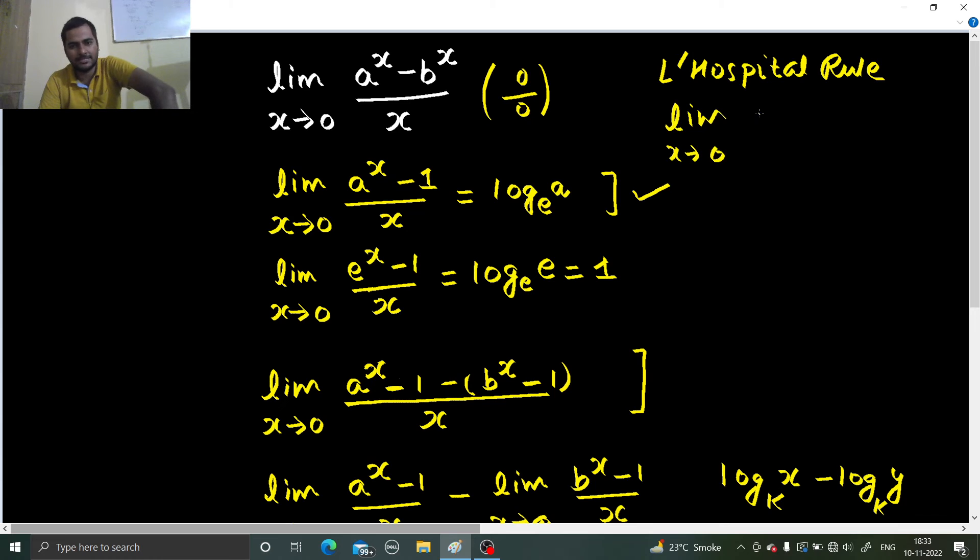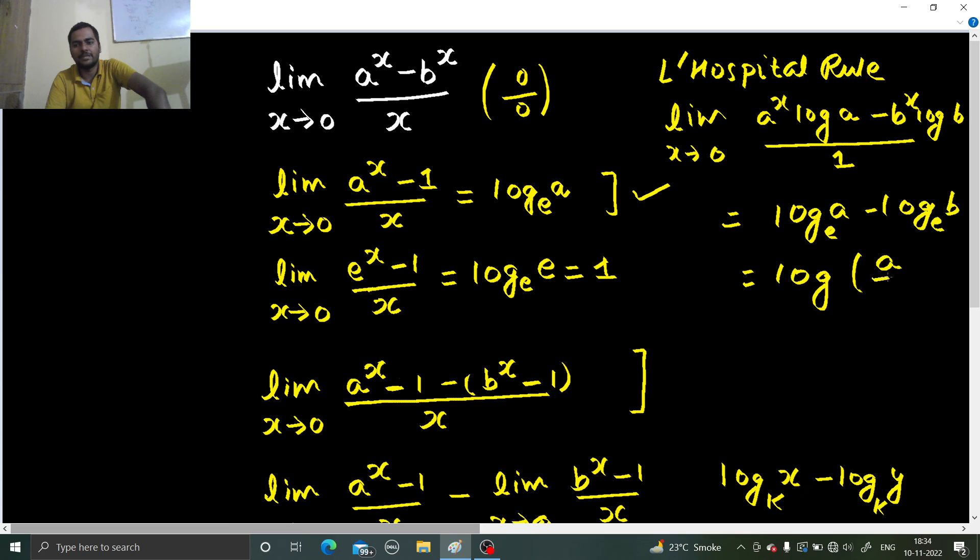Derivative of a power x is a power x log a. And minus b power x derivative is b power x log b. Derivative of x is 1. Now if I put 0, you will get a power 0, b power 0, both are 1. So you are getting log a minus log b, base to be e. So log a by b to the base e. Fine.